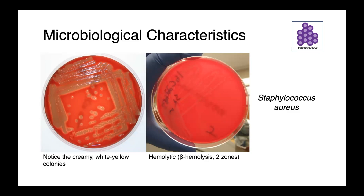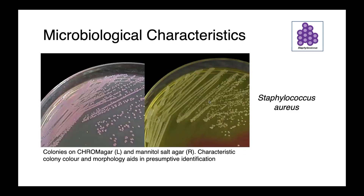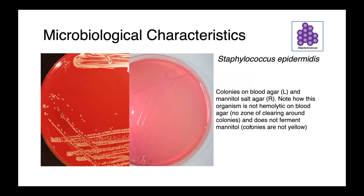Staphylococcus aureus is described as having double-zone hemolysis. On chromogenic media, here we have Staph aureus growing on CHROMagar Staph aureus on the left — these nice pink colonies — and mannitol salt agar on the right. This characteristic colony morphology is really useful in presumptive identification before biochemical tests. Here we have a strain of Staphylococcus epidermidis; on the left you can see colonies growing on blood agar and it is not hemolytic. On the right, on mannitol salt agar, while colonies do grow — this organism is halophilic and able to grow in high salt concentrations — it doesn't ferment mannitol, which helps to differentiate it from Staph aureus and Staph pseudintermedius.